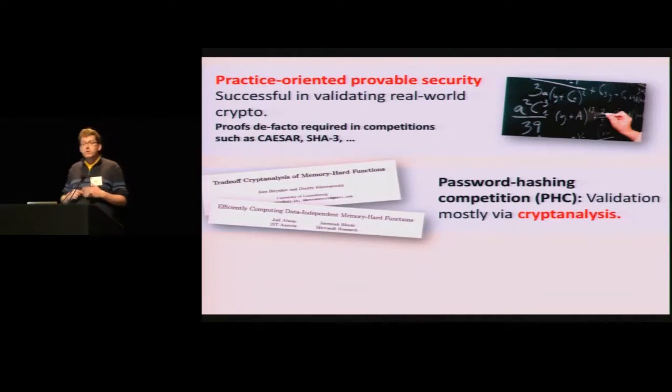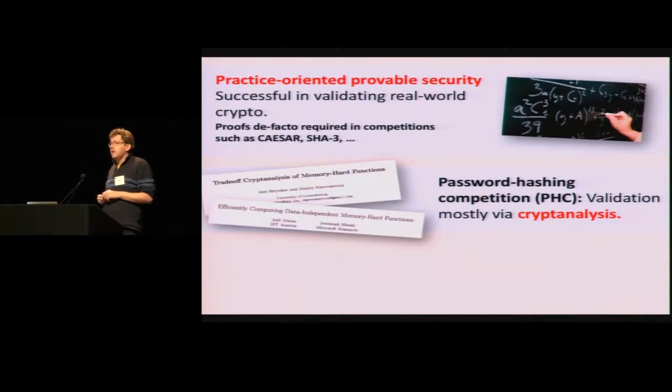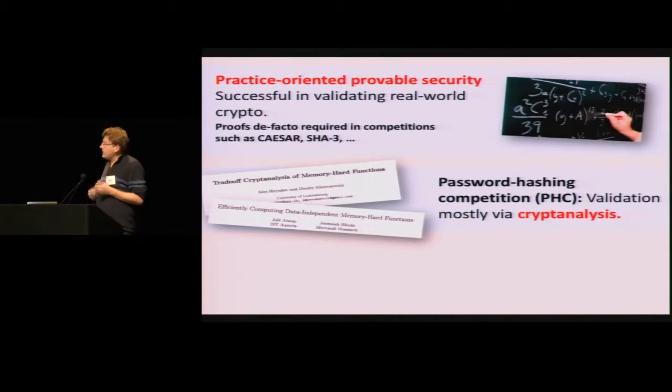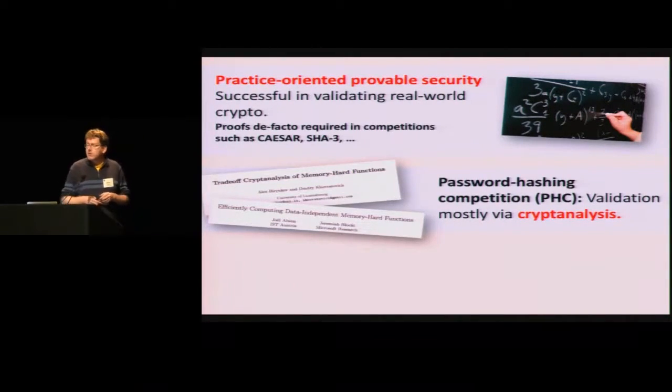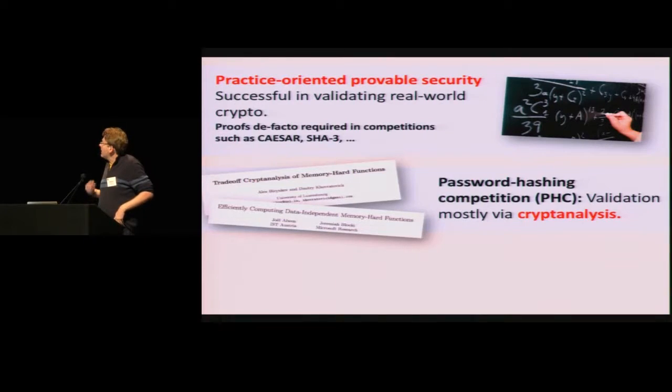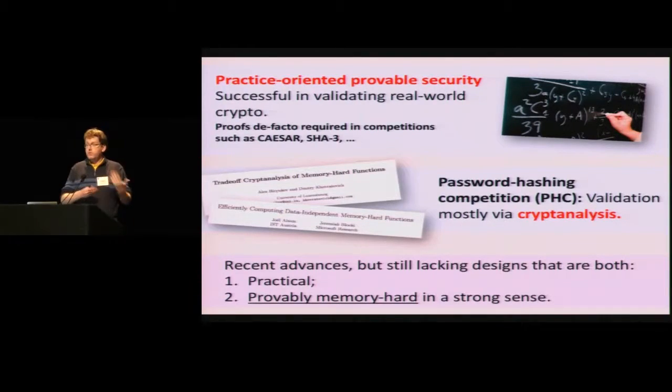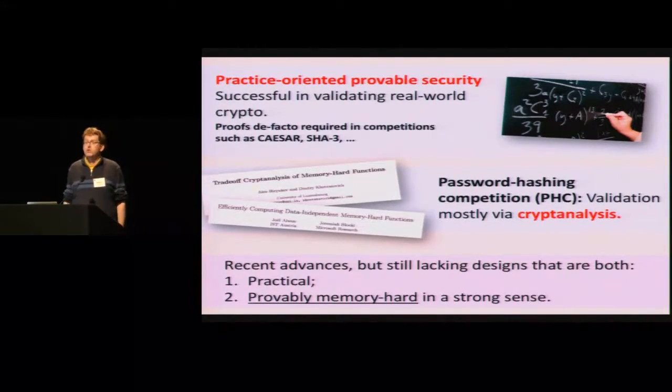So in particular, provable security has been very effective in validating real-world cryptography, because it helps us in gaining extra confidence, in particular against those attacks that we cannot envision yet. But somehow, in the context of memory hard functions and the password hashing competition, things went a little bit differently, mostly because we were lacking appropriate theory at that point in time. And validation there has mostly occurred in terms of cryptanalysis and often enough intuition. And as you've just seen, there is now better and better theory to validate memory hard functions. But we're still somewhat on a quest to find practical design that are also provably memory hard in the strongest possible sense.